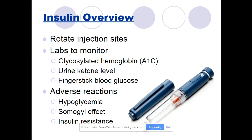You always want to rotate injection sites. The labs you need to monitor for insulin include the glycosylated hemoglobin, which is a hemoglobin A1c, the urine ketone level, and the finger stick blood glucose. Some people are on a sliding scale insulin, in which they receive a larger dose of insulin depending on the height of their finger stick blood glucose.